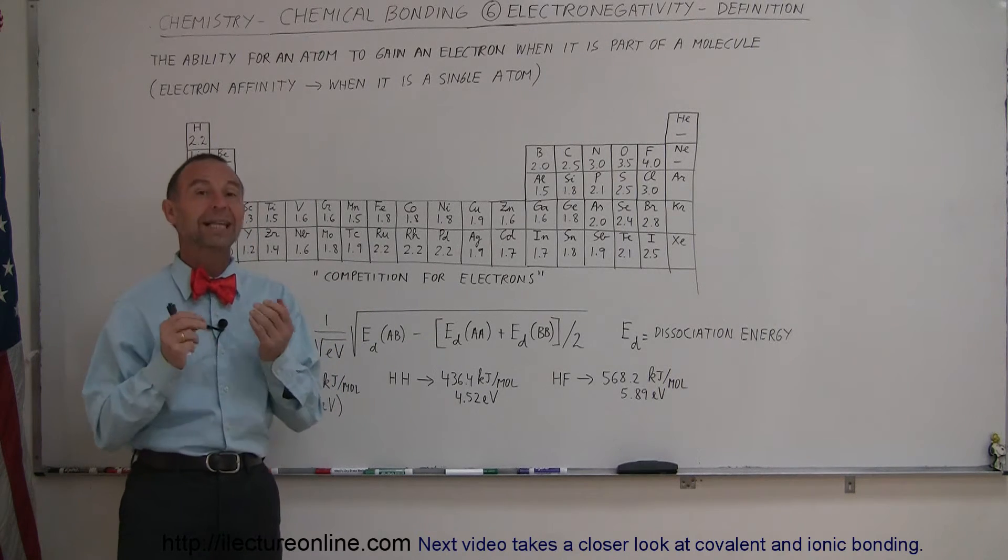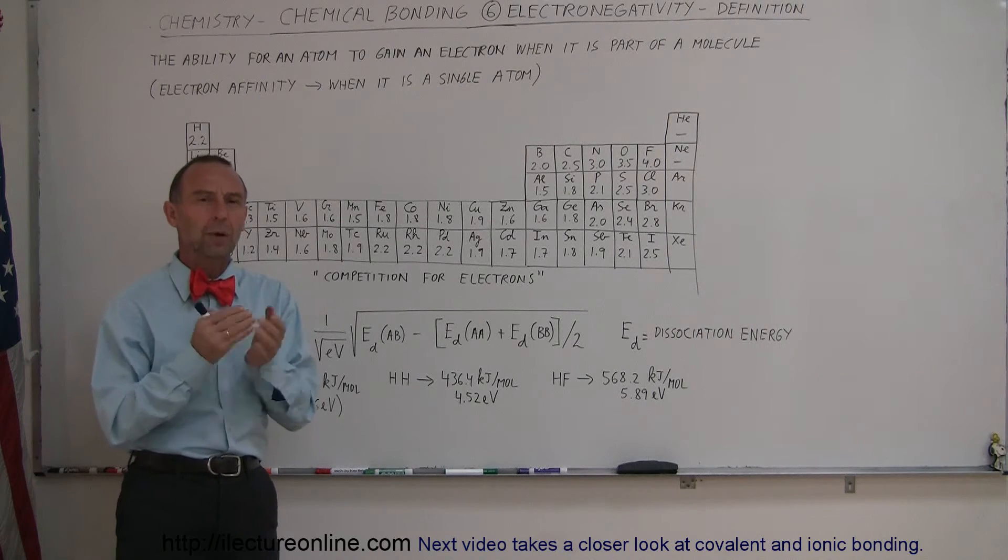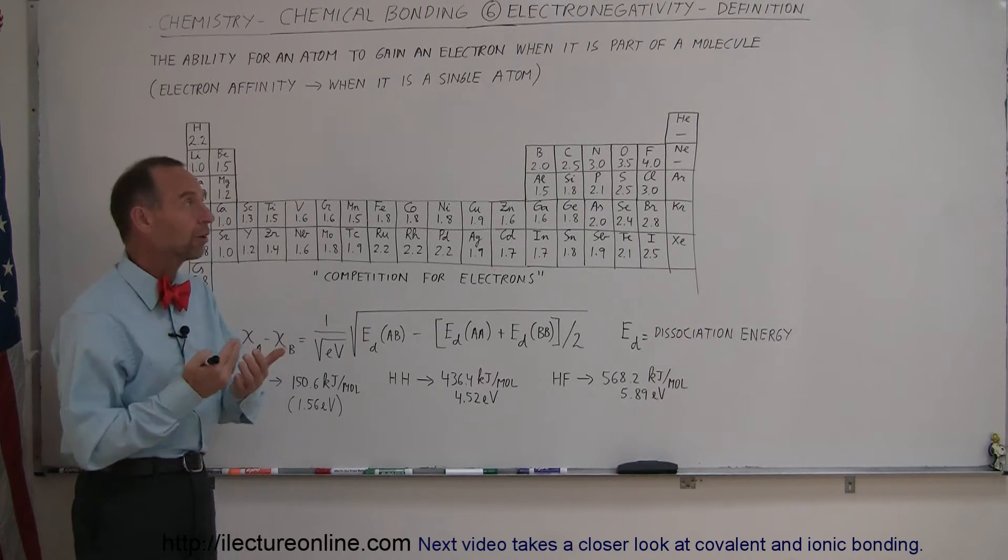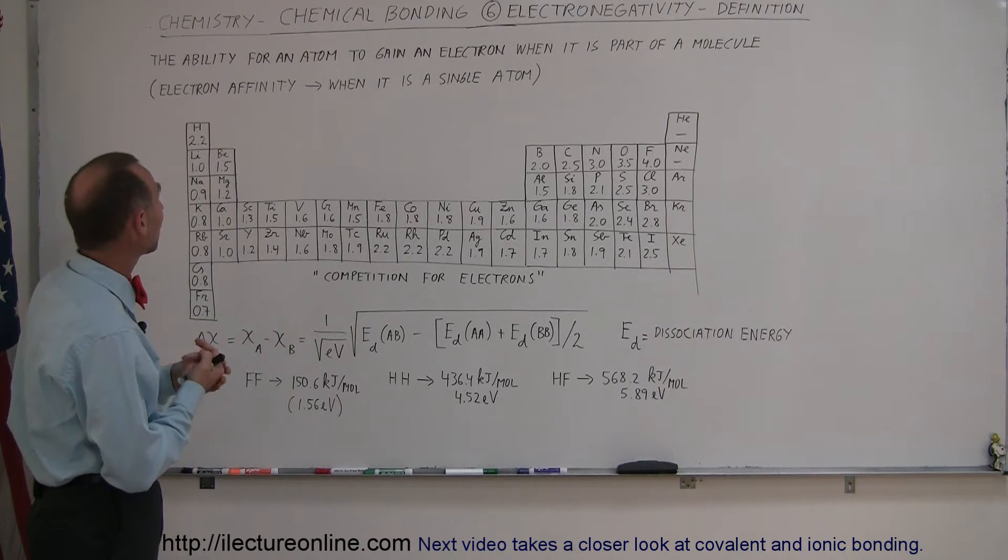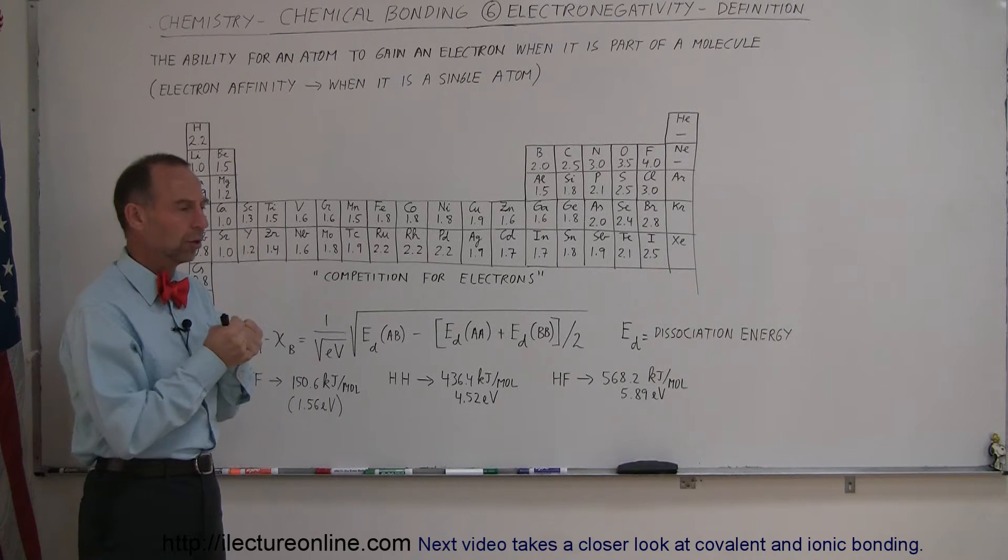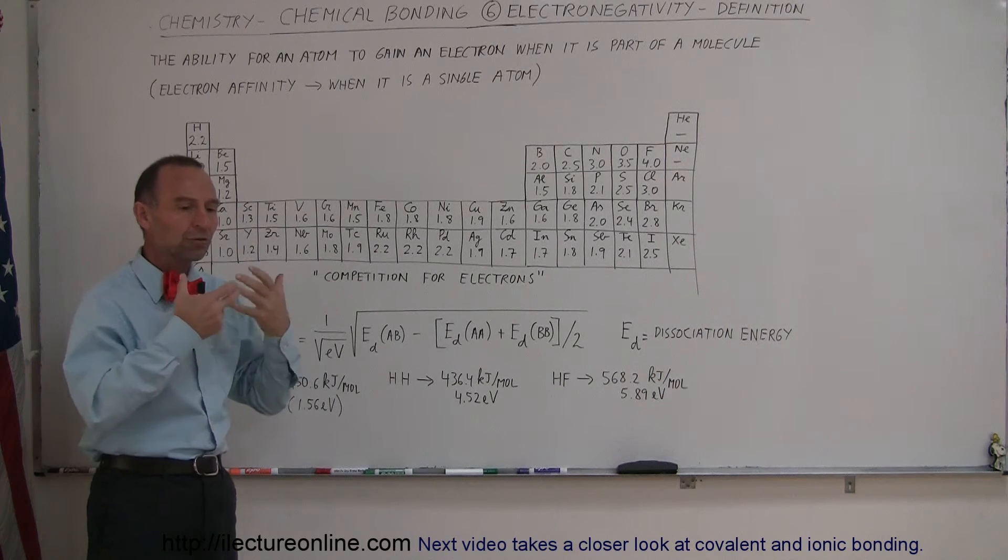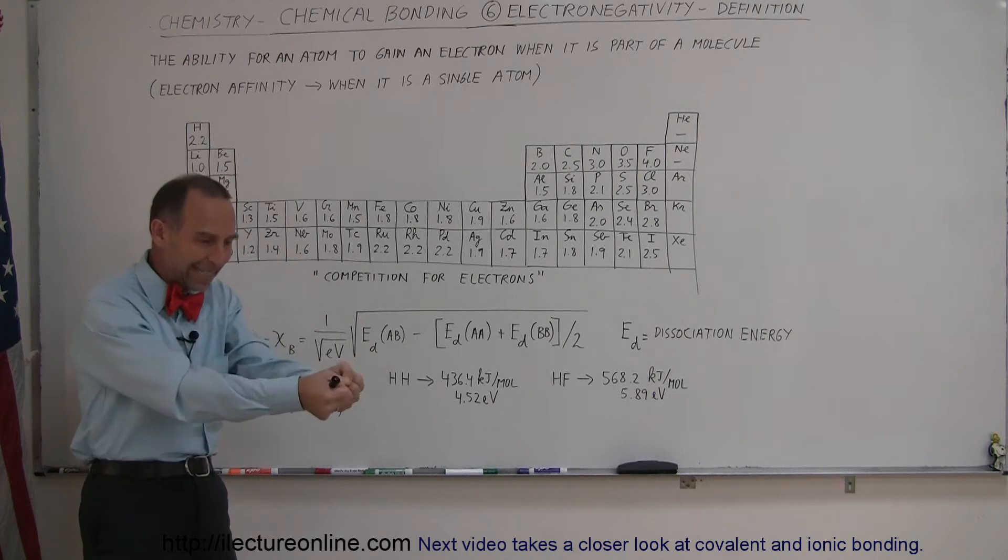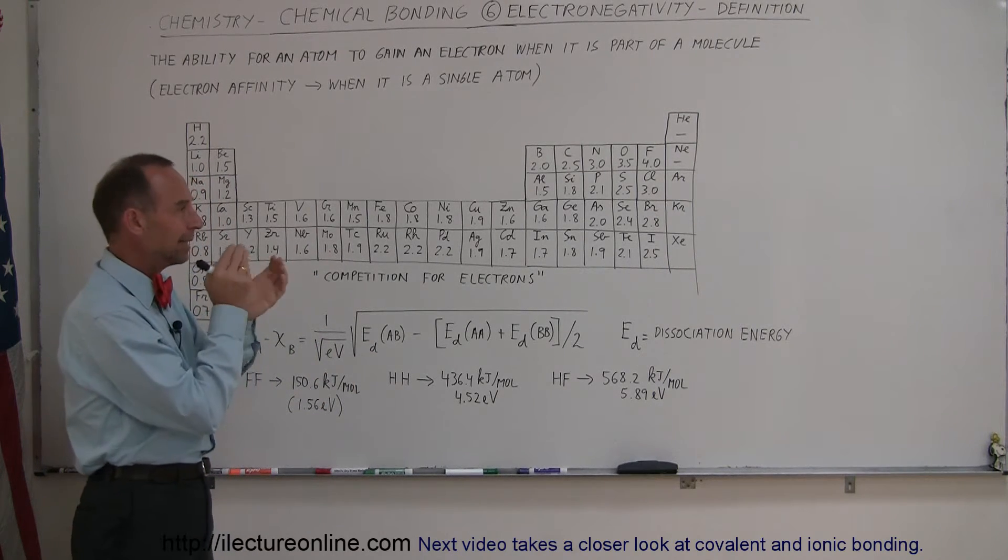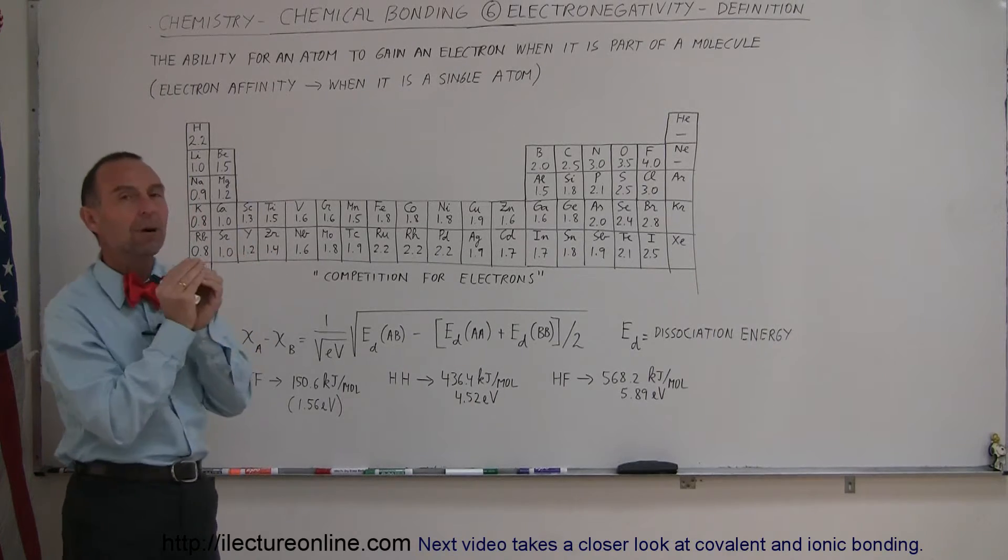is something called electronegativity. So what is the definition of that? What does that really mean? You might have heard it a lot as you try to study chemistry. But what it really means is the ability for an atom to gain an electron. So with how much force, with how much tenacity does an atom try to gain another electron? But we need to do that here in the space of it being part of a molecule.